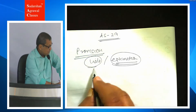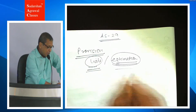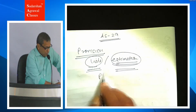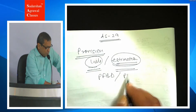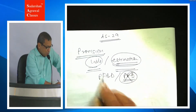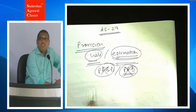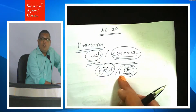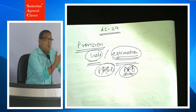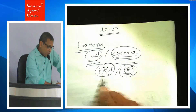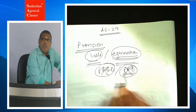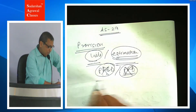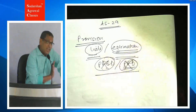Provision ki do characteristics hoti hain: one, it has to be a liability; two, it must be measured by using estimation. AS 29 mein provision for bad debts aur provision for depreciation cover nahi hota, kyunki in donon mein liability wali characteristic nahi hai. Yeh do reduction in the value of asset hain — yeh asset ke value ko girate hain — yeh liability nahi hain ki humne kisiko pay karna pade. This is why these two, which are behind the name of provision, don't attract the provisions of AS 29. They are separately discussed and not covered under AS 29.